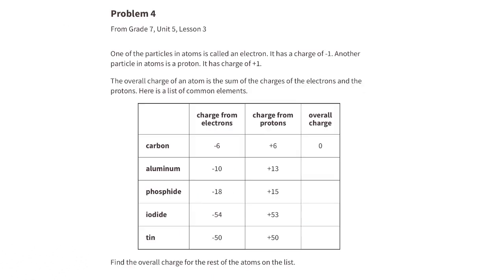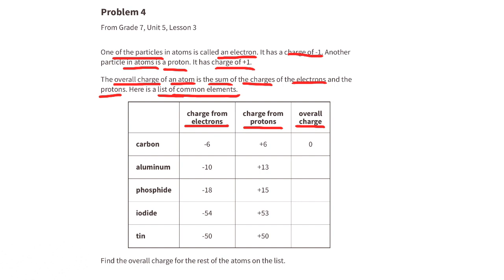Problem number 4 from 7th grade unit 5 lesson 3. One of the particles in atoms is called an electron — it has a charge of negative 1. Another particle in atoms is a proton — it has a charge of positive 1. The overall charge of an atom is the sum of the electrons and protons.